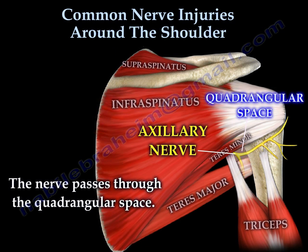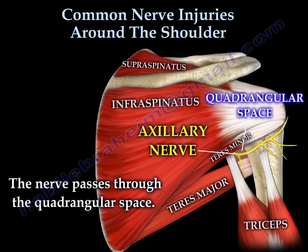The boundaries of the quadrangular space are: the teres minor proximally, the teres major distally, the humerus laterally, and the long head of the triceps medially.